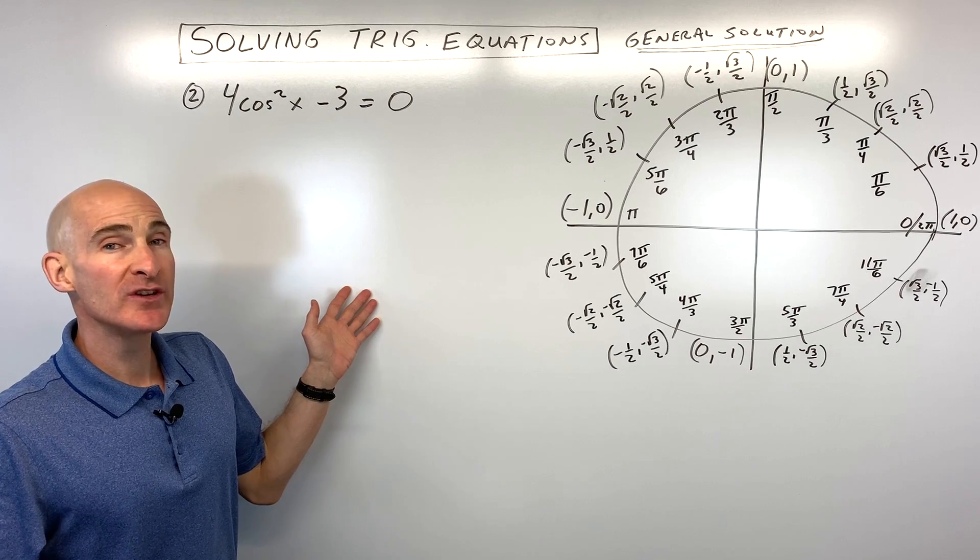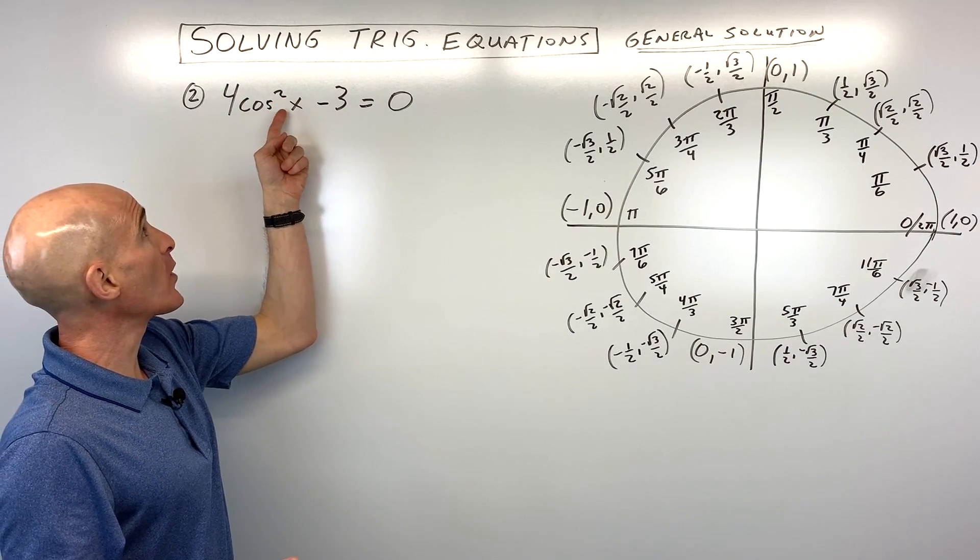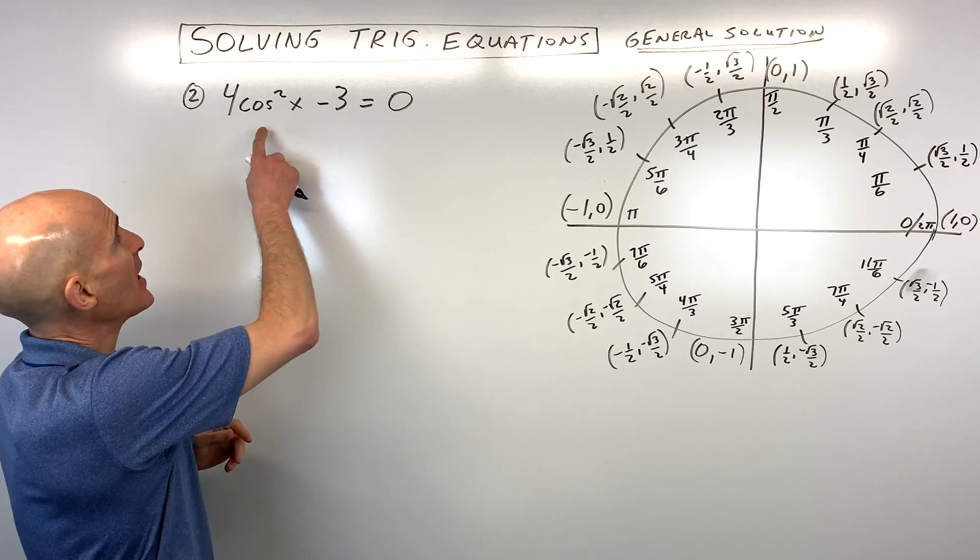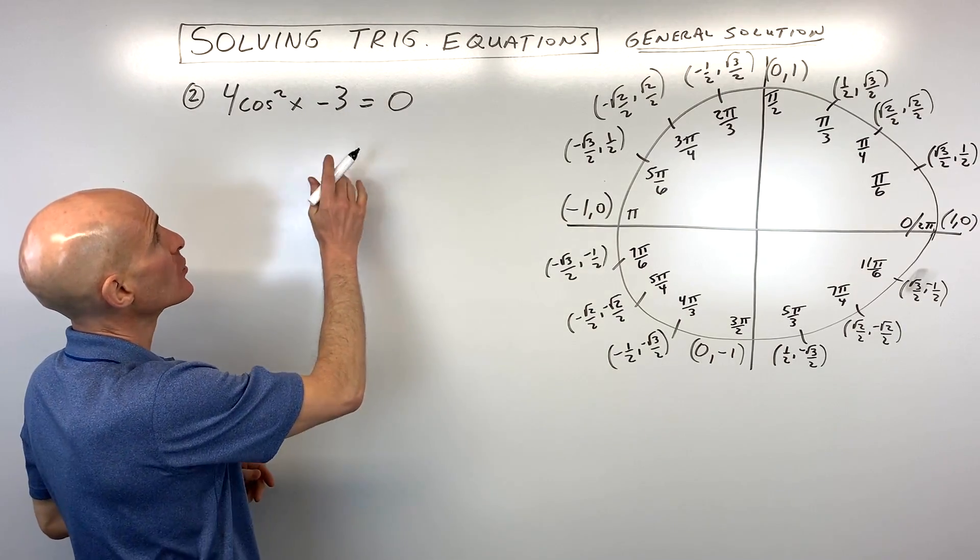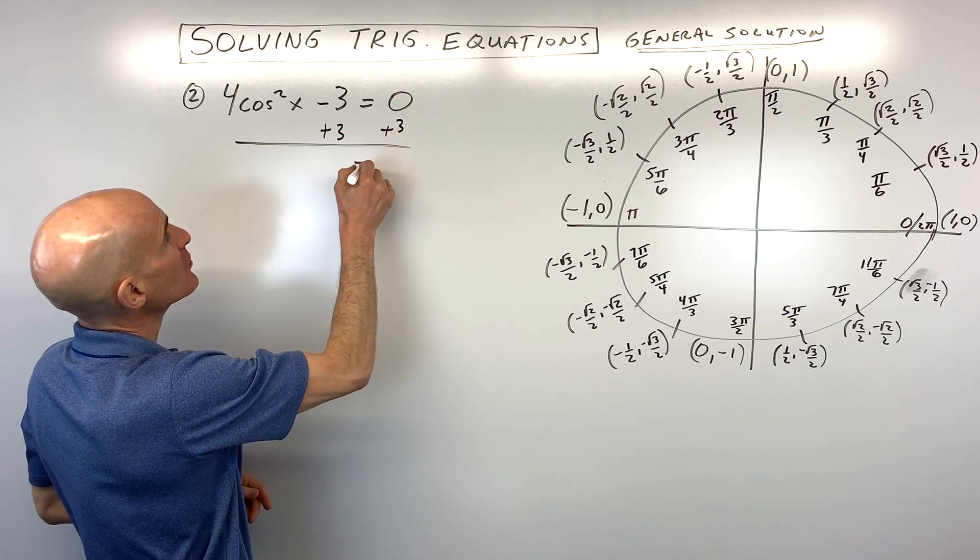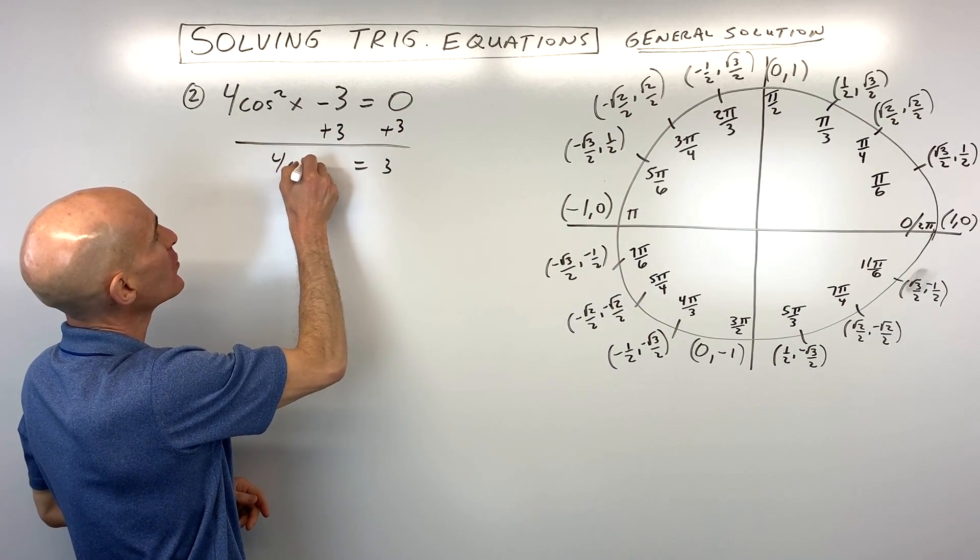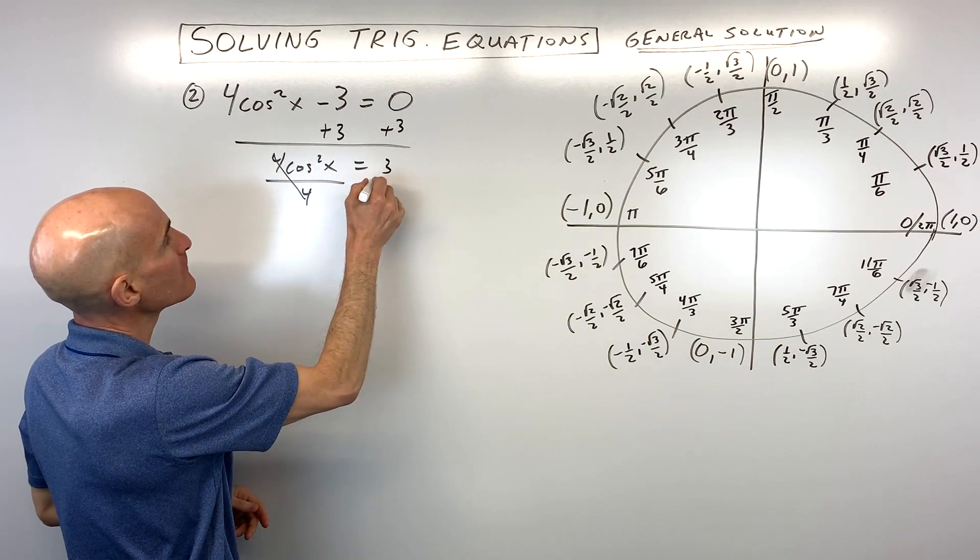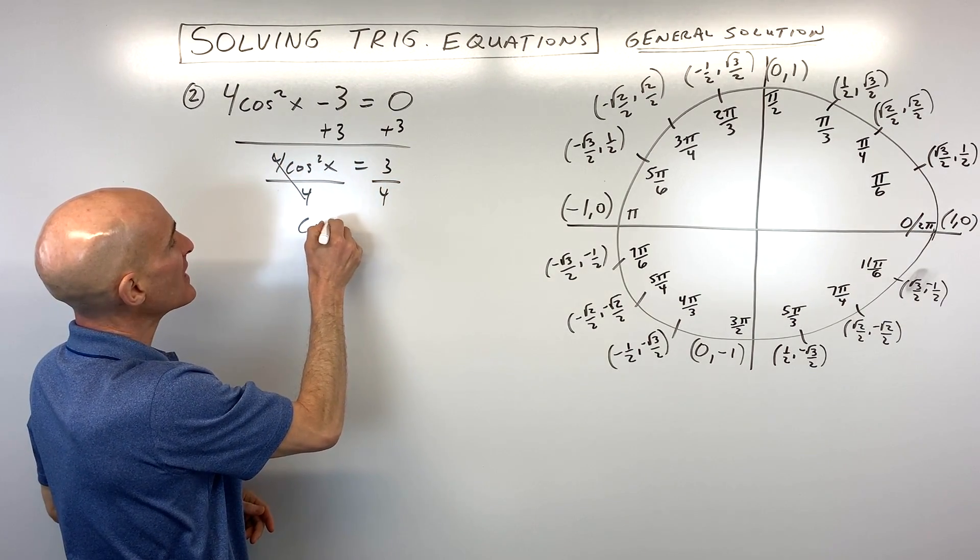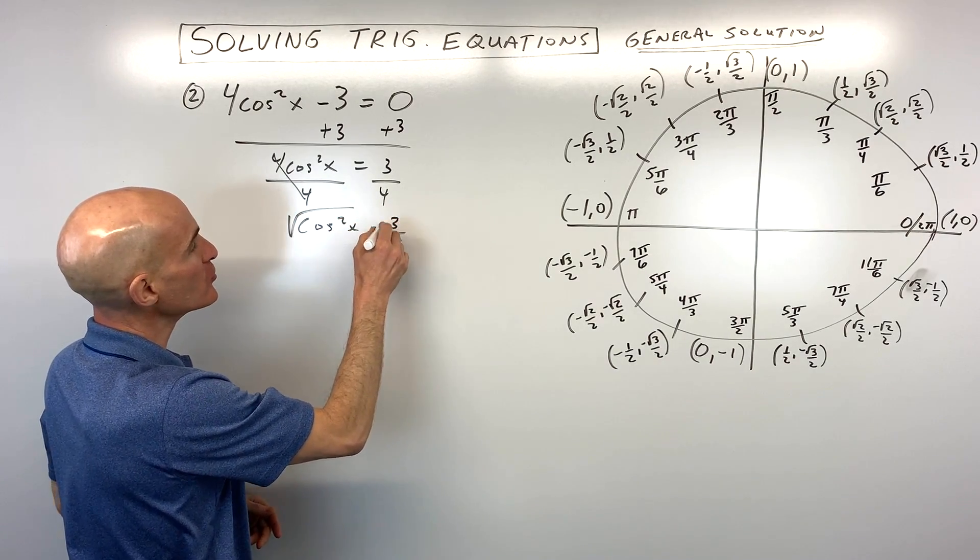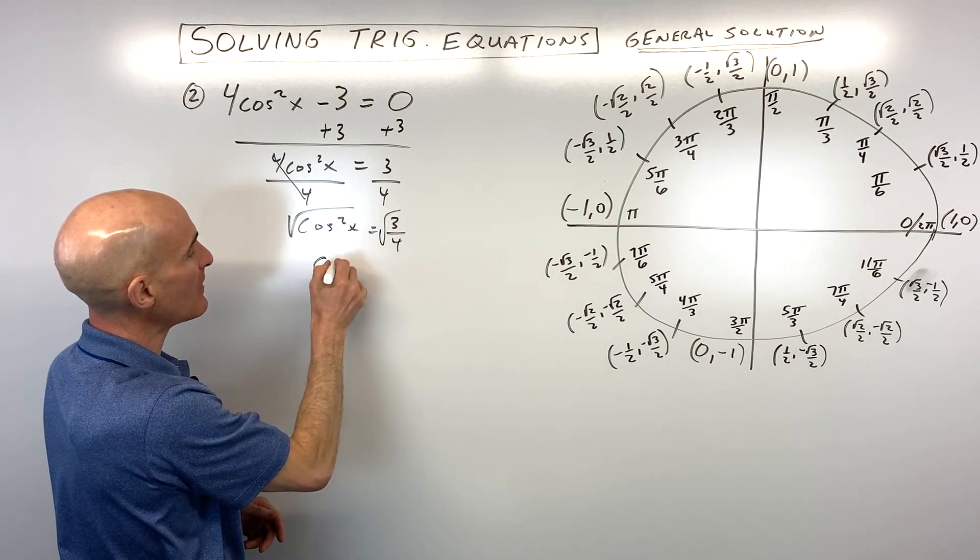Number two, see if we can do this one. We have 4 cosine squared of x minus 3 equals 0. So again, we're trying to isolate that trig function by itself on one side of the equation. So we're going to add 3 to both sides, so we get 4 cosine squared of x is equal to 3. We're going to divide both sides by 4, and now we have cosine squared x equals 3 fourths. What we're going to want to do is take the square root of both sides to get the cosine by itself.